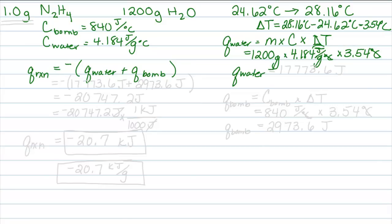When I multiply this through, I find that the Q of the water is going to be 17,773.6 joules. So now I know half of the energy that was absorbed by the water, and where did that come from? Well, that energy that was absorbed by the water, which the water used to raise its temperature, was released when the hydrazine was burned. It was released from the reaction.